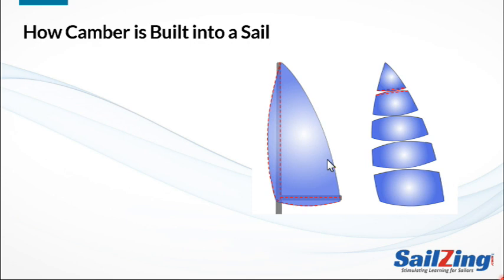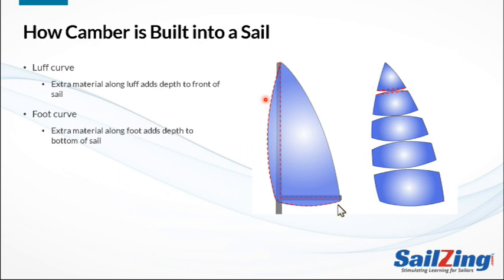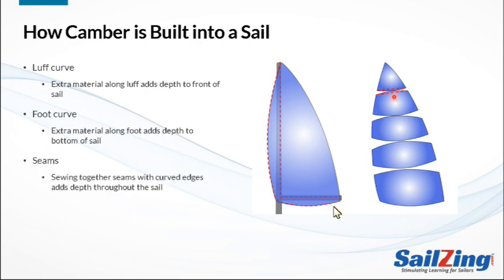Now let's talk briefly about how camber is built into sails. First, the sailmaker cuts the luff and foot of the sail in a curve. When the boom and mast are straight, the extra material leaves a pocket in the sail. These pockets can be flattened by bending the mast or the boom. Next, the sailmaker curves the edges of the panels. When sewn together, the extra material forms pockets along the seams. These pockets are less responsive to flattening than the luff curve. The sail designer determines how much curvature is desired for the luff, foot, and each of the seams to optimize the sail shape and its response to the sail controls.